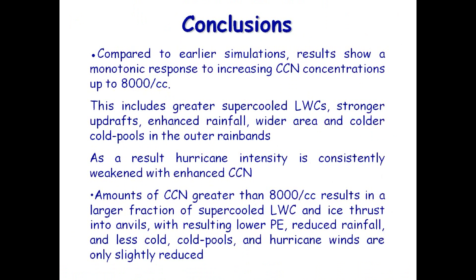What is happening in that case is that there's so much pollution that the droplets are so small that the riming rates of the ice particles is suppressed, and you get this huge anvil being produced. You don't get the strong rainfall below the base of the clouds, and you don't get the cold pools to the same extent. But still the storm is weakening, though more marginally.